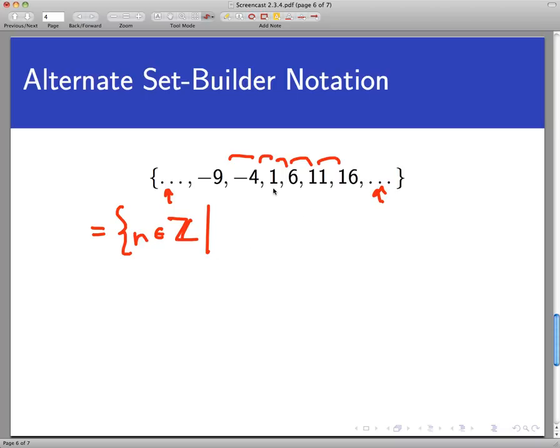This is one plus zero, this is one plus five, this is one plus ten, this is one plus fifteen, this is one plus negative five. So all these elements have this property in common that they are integers such that n is equal to, let's say, five k plus one for some other integer k.